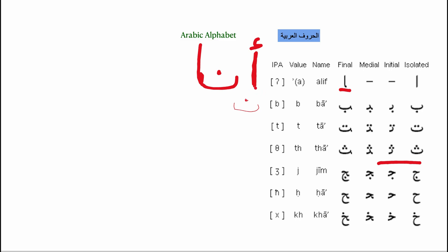For example: 'anna' means 'I.' You can say 'anna jou'an' — I am hungry. Now let's try the letter ba with alif: you write ba, add another alif, and get 'bab,' which means 'door.'